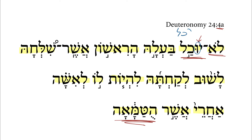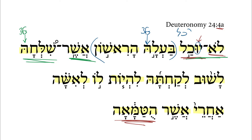Who is the he? This is the first husband — her first husband — with a third feminine singular pronominal suffix. So her first husband is not able, and this first husband is the one who sent her away — third feminine singular suffix. This is a qal perfect third masculine singular of the verbal root shalach, plus that third feminine singular suffix. So her first husband, who sent her away.